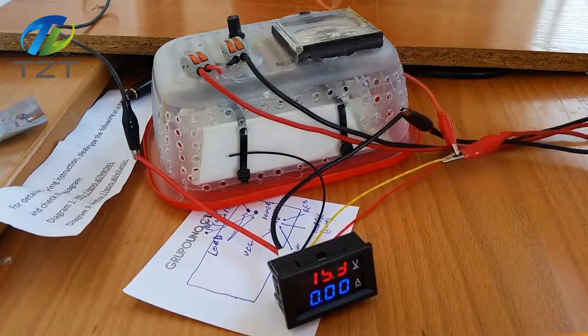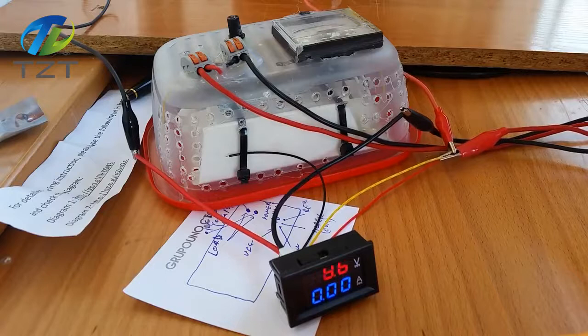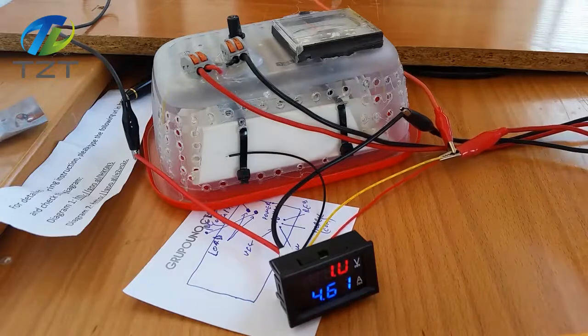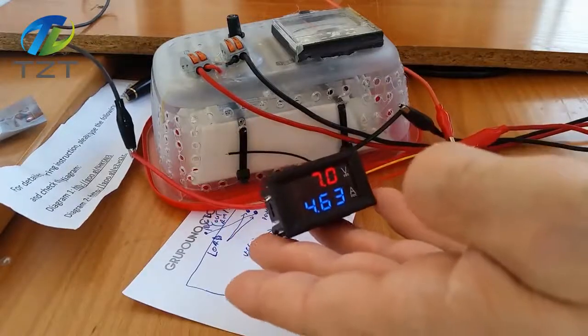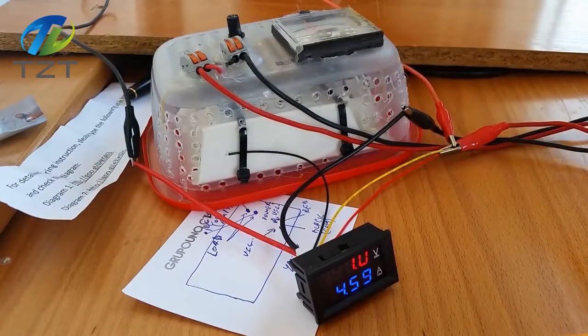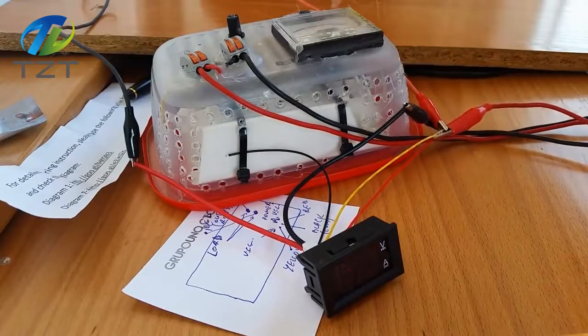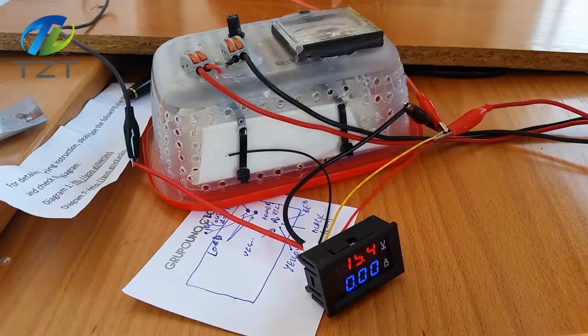So it goes up to 4 amps, but it's like 7 volts, so yeah, that doesn't help. The meter is right. That was the meaning of this video, and it's working up to 5 amps, probably. The voltage dropped a lot.